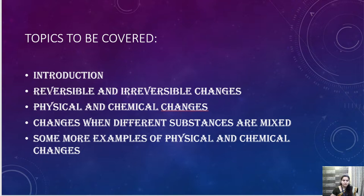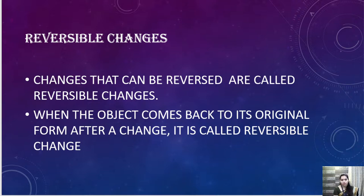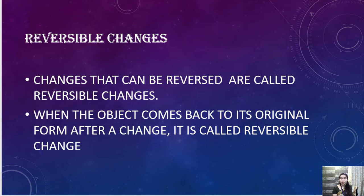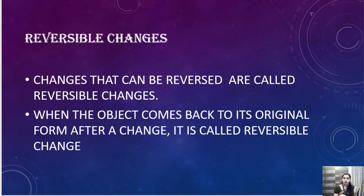We have done the introductory part of the chapter yesterday. Today we will be dealing with two topics: reversible and irreversible, and physical and chemical changes. Starting with reversible change — the word 'reversible' means to reverse. When any substance or object comes back to its original form after a change, it is called a reversible change.